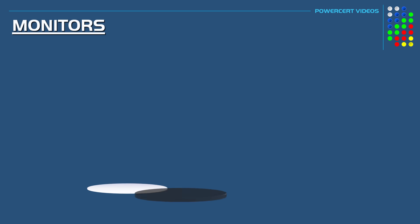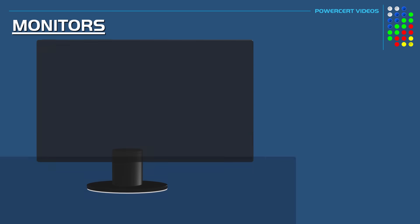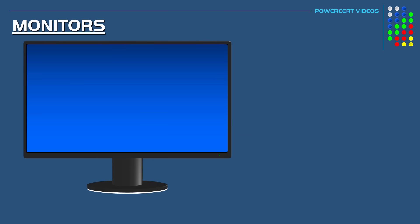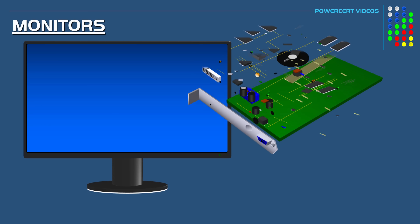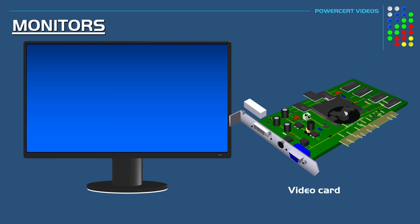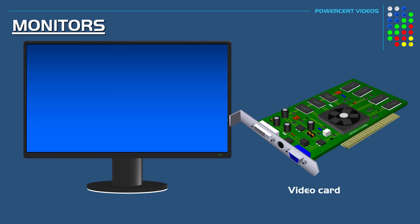Hello everyone. In this video we're going to be talking about monitors. A monitor is the primary output component of a computer. On a desktop computer it connects to the computer's video card through a monitor cable and it displays images on the screen.